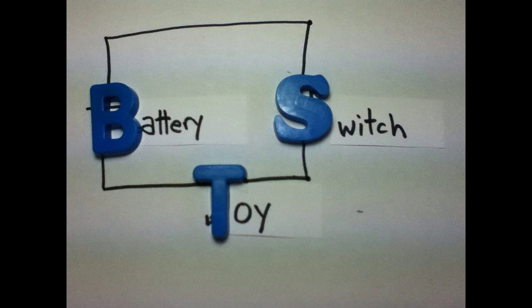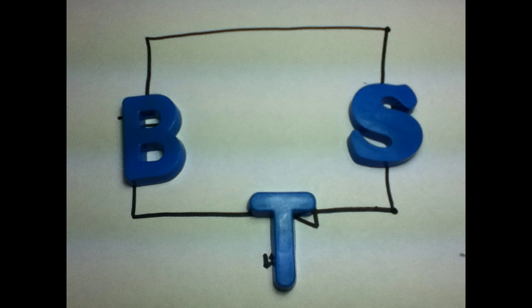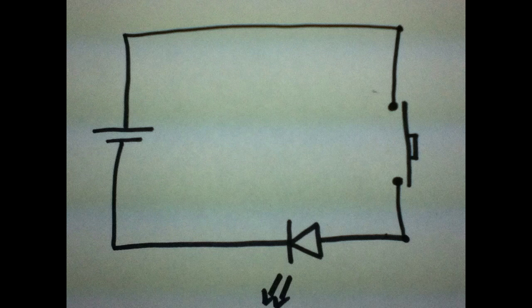So I've got the battery, the switch, and the toy. If I took those away, this is a basic schematic of what you would see. So on the left side, the battery, I've got a push-button switch on the right, and I've got a light-emitting diode on the bottom, or an LED.